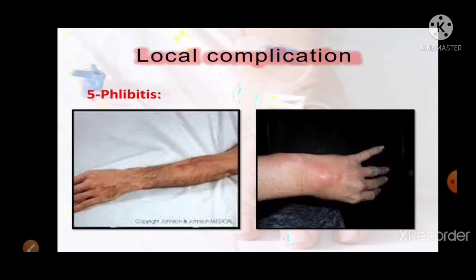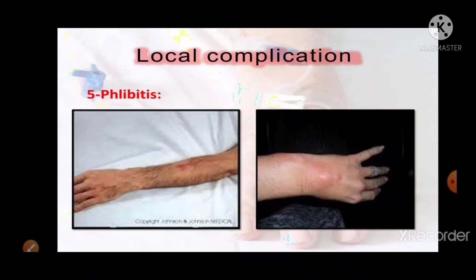Phlebitis complications may include local infection and abscess formation, clot formation, progression to deep venous thrombosis, and pulmonary embolism. Venous thrombophlebitis can seriously damage the leg veins, leading to post-phlebitis syndrome. The biggest short-term concern is spread from a superficial vein to a deep vein; long-term, phlebitis can recur, and rarely infection can arise in clotted veins, associated with high fever and extensive redness.